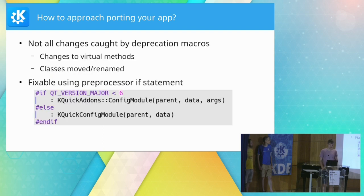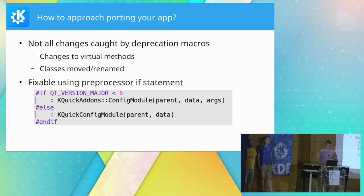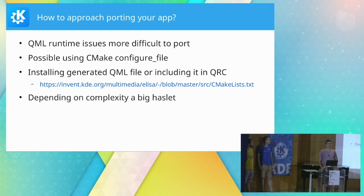Since doing all this manual work is tedious, Laurent has shared his script for adjusting most of the build system stuff — you can check it out in the kde-dev-scripts repository in the `kf6` folder, which contains the build system script and other scripts for porting Kirigami APIs and such. But not all changes can be caught by deprecation macros — for example changes to virtual methods because they are binary incompatible, or classes being renamed or moved. This is what happened with KCMs: the `KCModule` class was in `KConfigWidgets` and also in `KDeclarative`, and all related classes were moved to `KCMUtils` with new names.